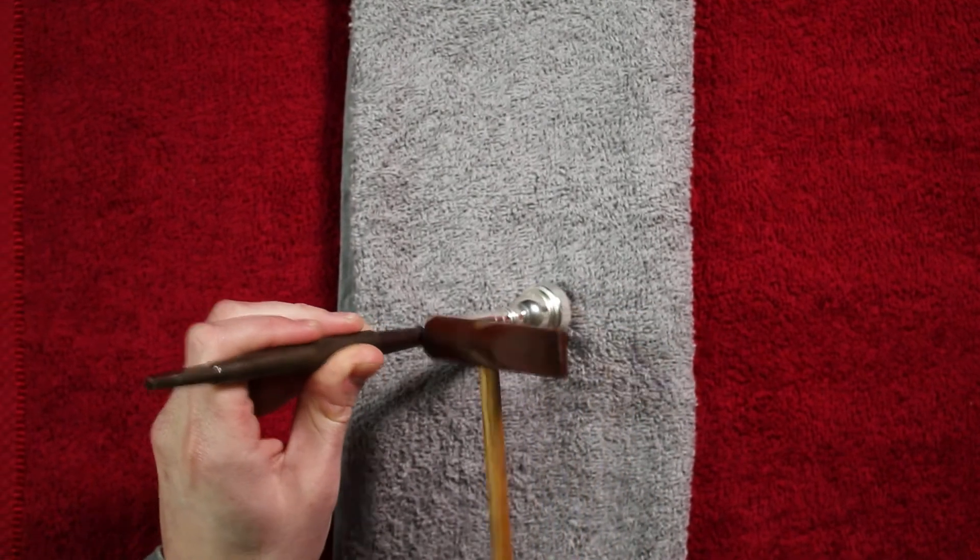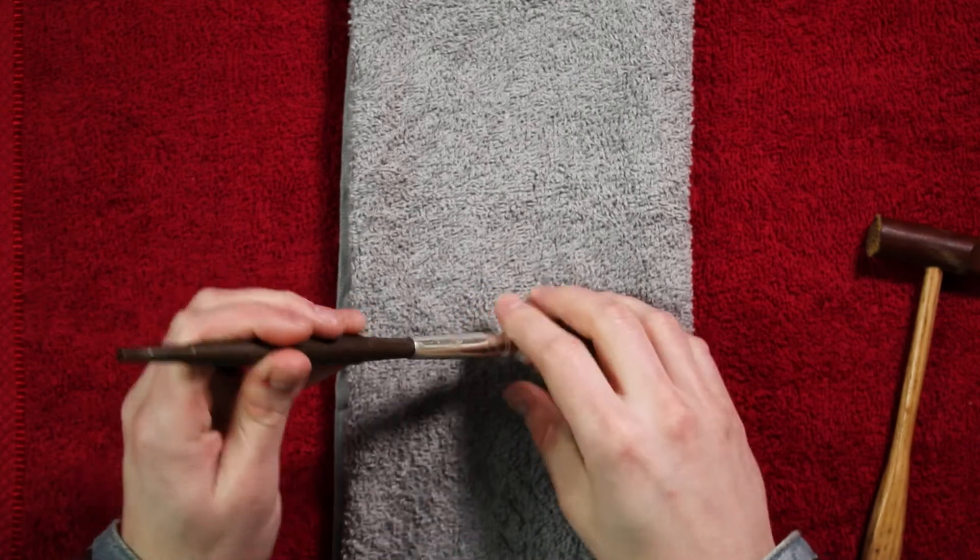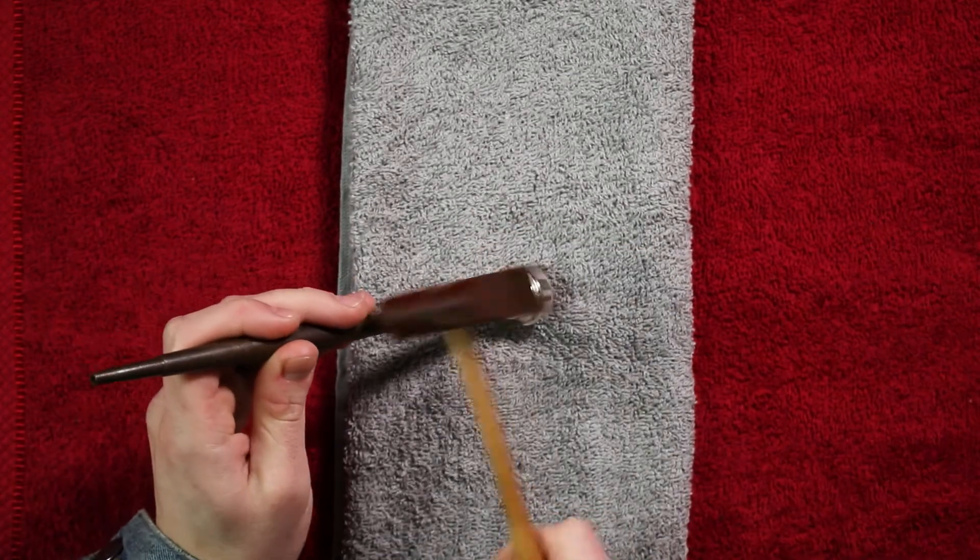Rotate the mouthpiece and continue to lightly tap the shank back into its original shape until you feel the mouthpiece break loose from the truing tool.